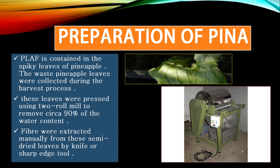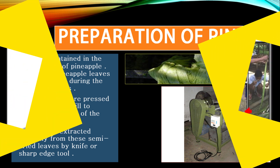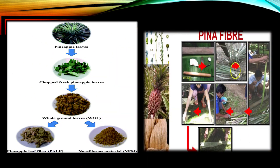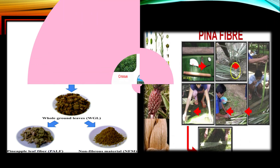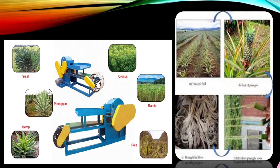The leaf has about 90 percent water content, and we want to remove this water. Then we dry it — we put it in sunlight to dry. Here I am showing how we first take the leaf, then how we process it to create the fiber.